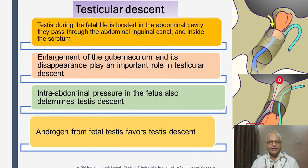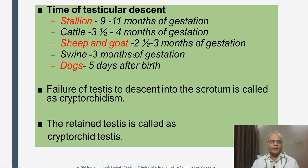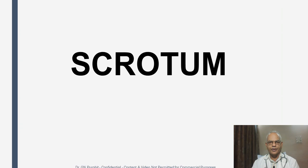During fetal life, the testes are located in the abdominal cavity; they pass through the inguinal canal and descend into the scrotum. The enlargement of the gubernaculum and its disappearance play an important role in testicular descent. Intra-abdominal pressure in the fetus also determines testicular descent, and androgens from the fetal testes favor the descent. The time of testicular descent: stallions — birth to 11 months of gestation; cattle — 3.5 to 4 months; sheep and goat — 2.5 to 3 months; swine — 3 months; dogs — 5 days after birth. Failure of the testes to descend into the scrotum is known as cryptorchidism, and the retained testes are called cryptorchid testes.